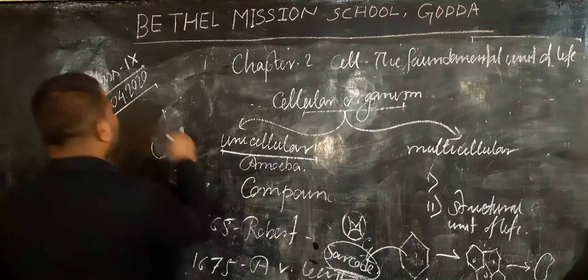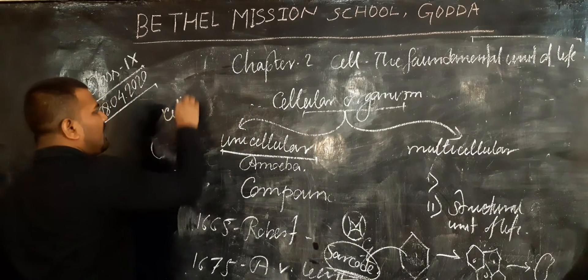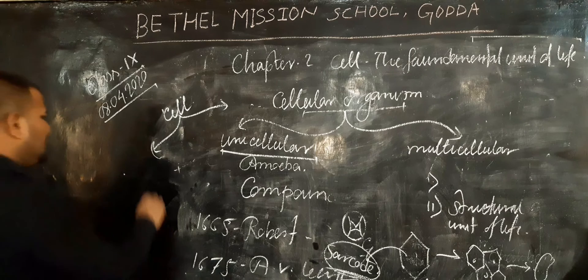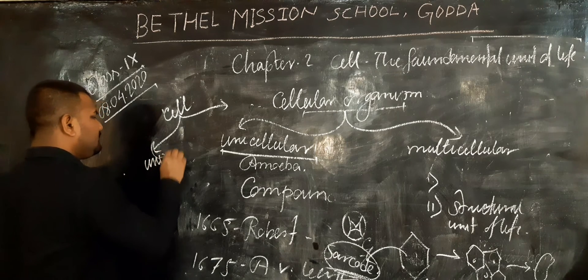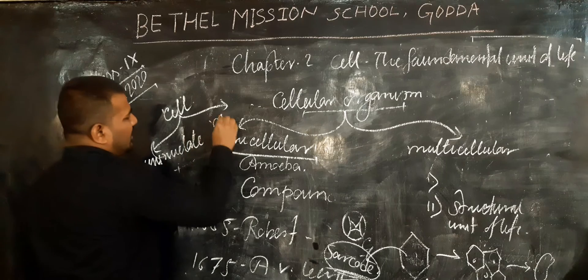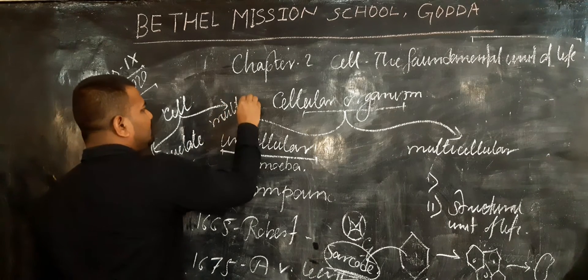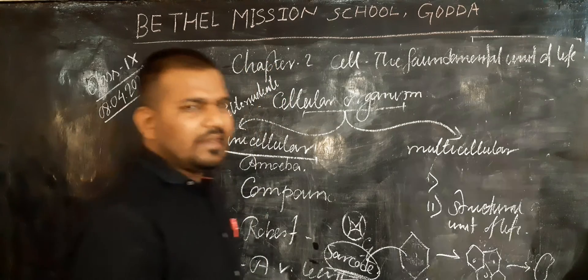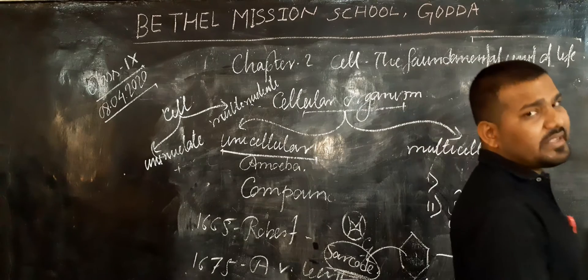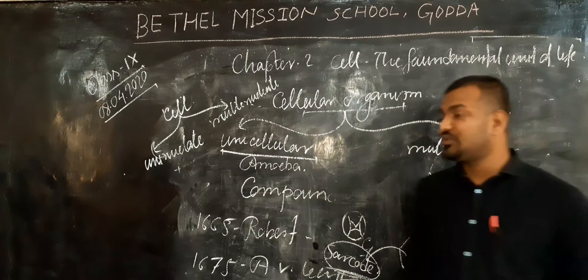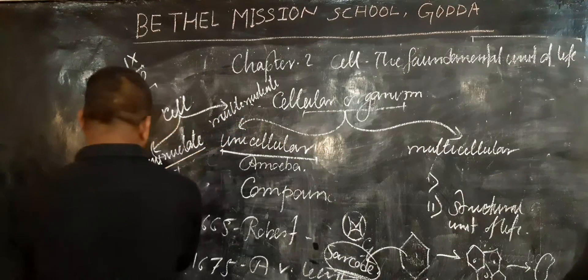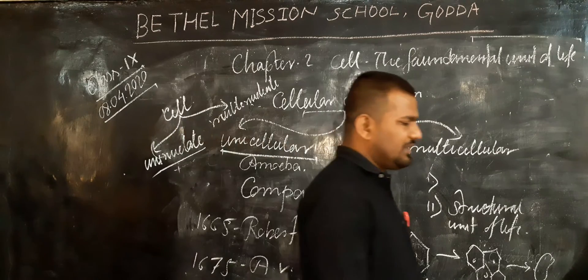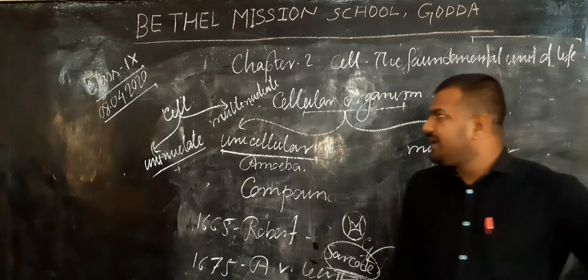Cells can also be classified on the basis of nucleus number. On the basis of nucleus number, a cell may be uninucleate or multinucleate. Uninucleate means the cell contains a single nucleus — for example, our body cells contain only one nucleus. Whereas our muscle cells contain two to five nuclei within the cell, making them multinucleate cells.